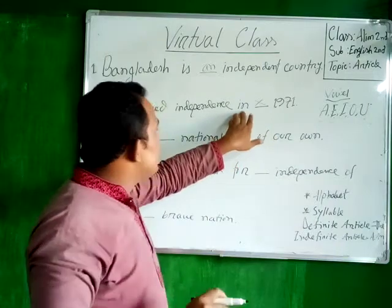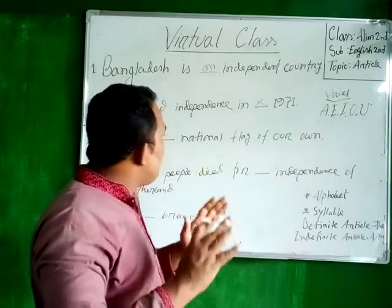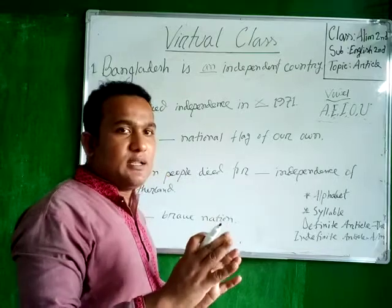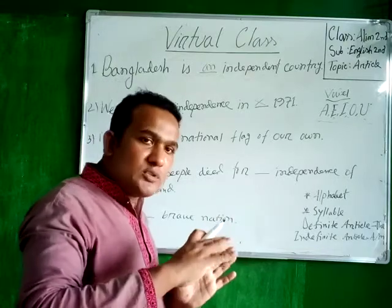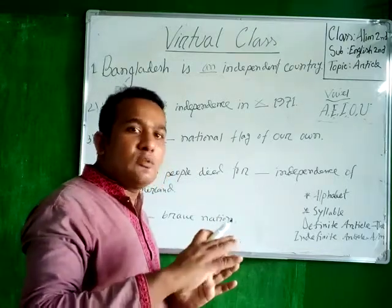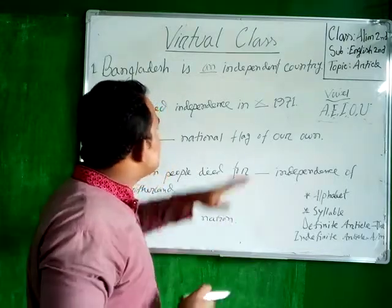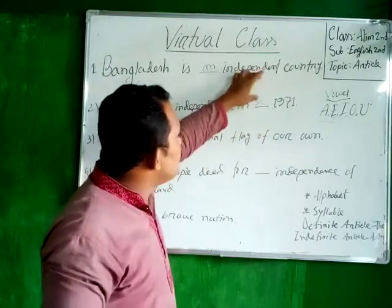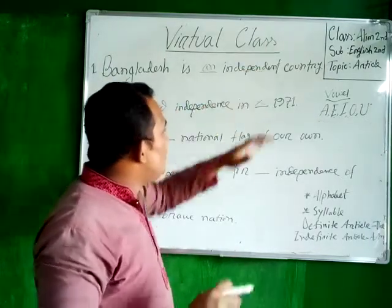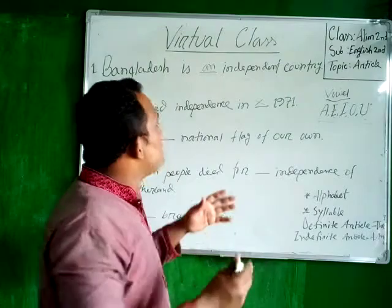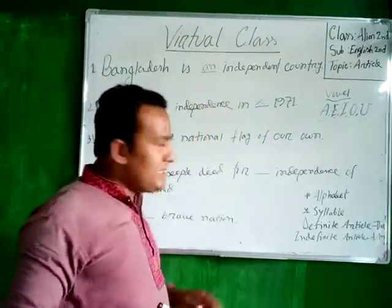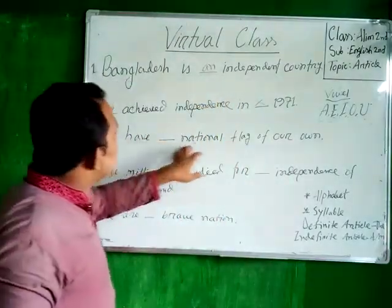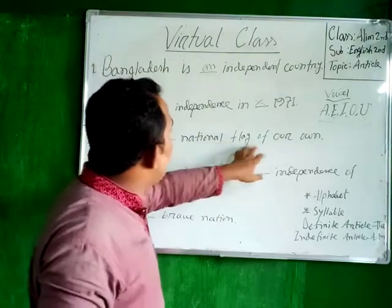I have told you that after a preposition, basically there is no article — in most cases, but not all cases. After a preposition, there will be no article. So when there is no article, you have to put a cross mark here. For example: 'We have the national flag of our country.'